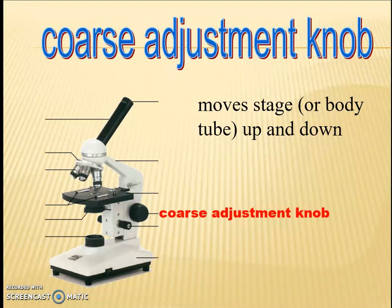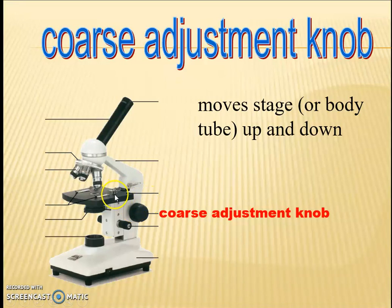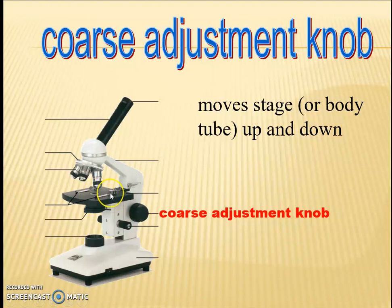The coarse adjustment knob moves the stage or the body up and down. By rotating this knob, you can move the stage up or down to adjust the focus of your specimen.